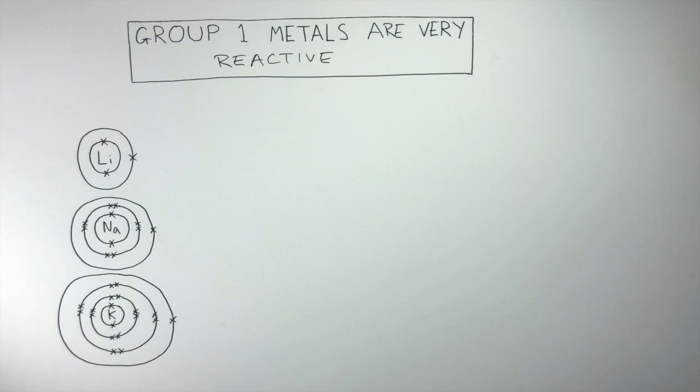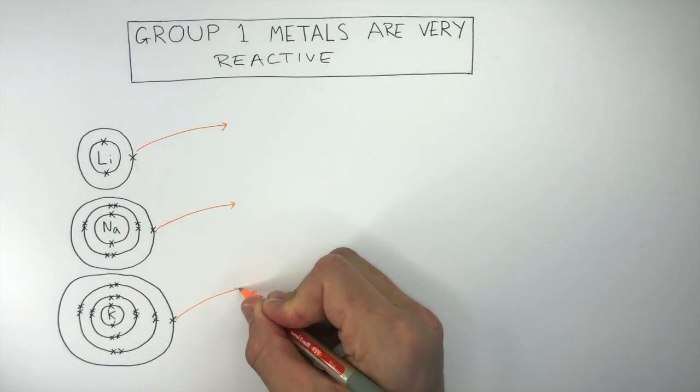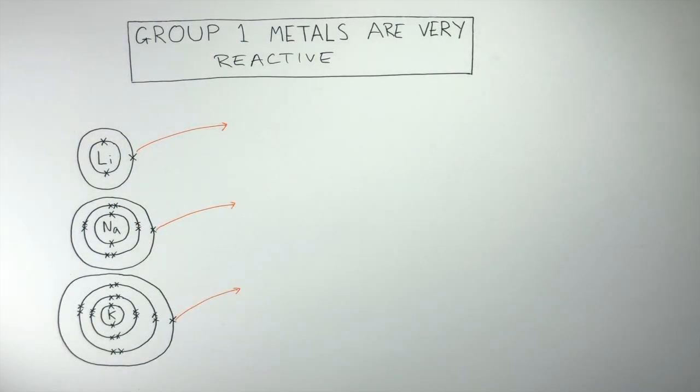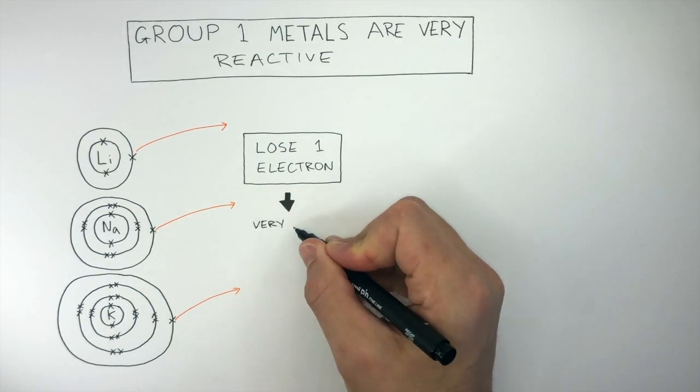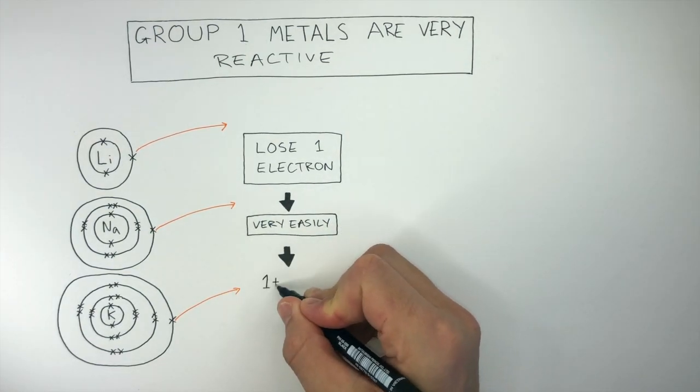They all have one electron in their outer shell. Therefore, they're not stable as they need a full outer shell of electrons. They all lose one electron to achieve this full outer shell. So all group 1 metals lose one electron very easily and form 1+ ions.